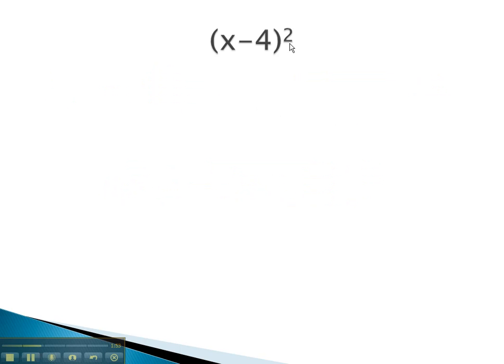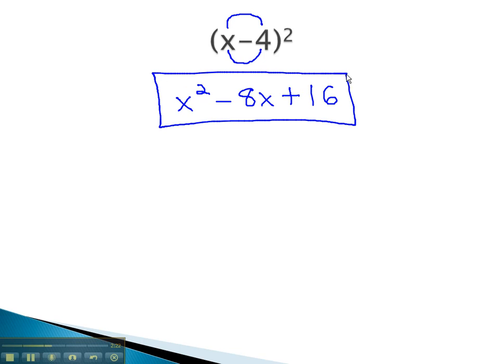Here is a problem where we have a binomial squared. To square it, we can square the first term, x squared, and then we look at the product. x times negative 4 is negative 4x, and another negative 4x will give us negative 8x, because it's there twice. And finally, we square the last, negative 4 squared is positive 16, and this becomes our product.